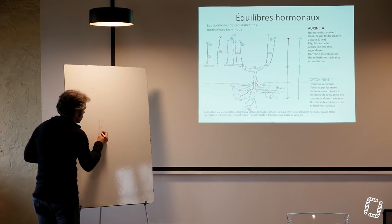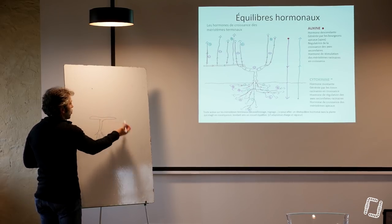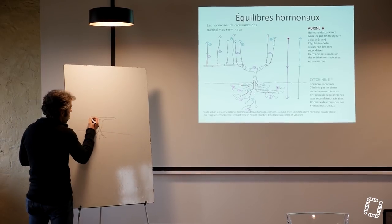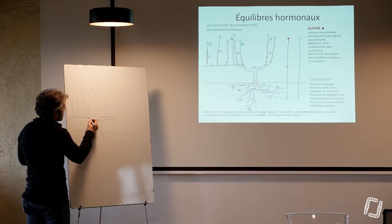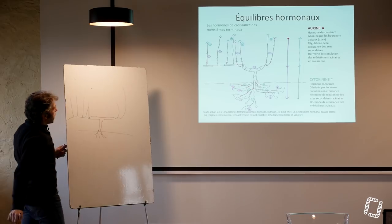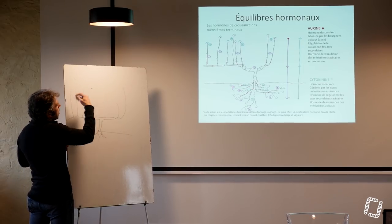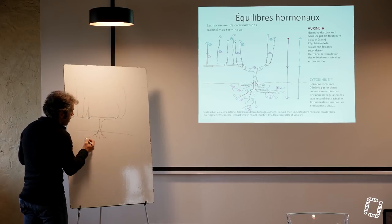Je redessine, parce que je pense que c'est plus dynamique une fois dessiné. Donc, on a notre plante, le système racinaire et la partie aérienne. On a notre baguette de l'année dernière, éventuellement un courson et un autre courson de ce côté-là. À la fin de l'année, on a un équilibre entre les branches, entre les sarments et le système racinaire.